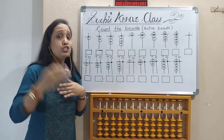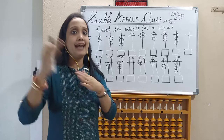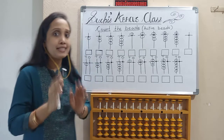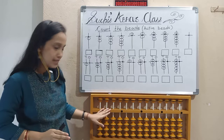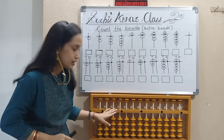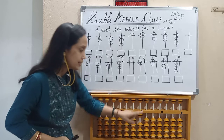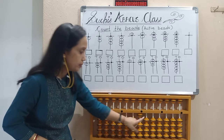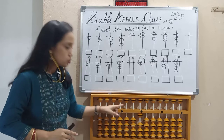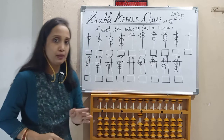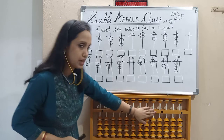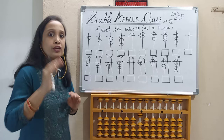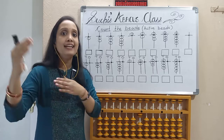In the previous class, I also told you about active beads and slipping beads — two types of beads. Active beads are those that are touching the abacus horizontal bar. If one bead is touching the horizontal bar, that bead is called an active bead. Beads that are outside the horizontal bar are called slipping beads. The beads in contact with the horizontal bar are active beads, and their values we have to count for further addition and subtraction.